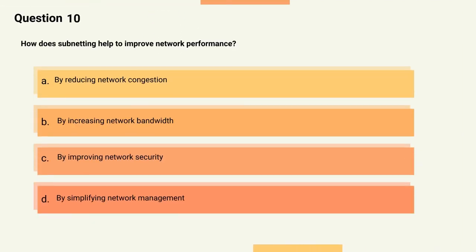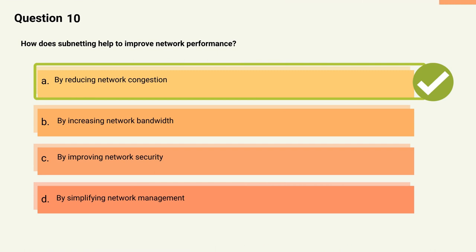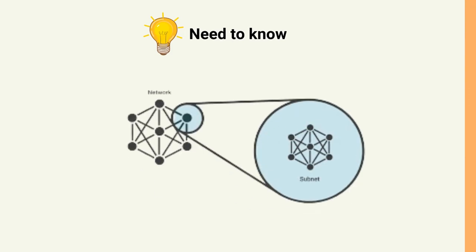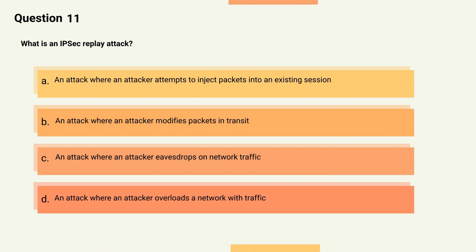Question 10: How does subnetting help to improve network performance? Options: A) By reducing network congestion, B) By increasing network bandwidth, C) By improving network security, D) By simplifying network management. The correct answer is Option A, by reducing network congestion. Explanation: Subnetting can help reduce network congestion by dividing a larger network into smaller, more manageable subnets, reducing broadcast traffic and limiting the scope of network issues.